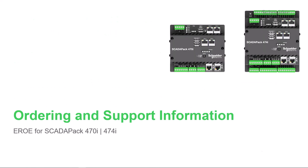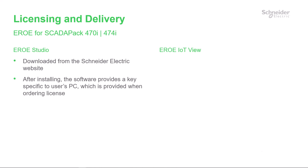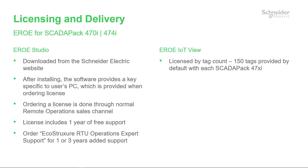Now let's have a quick look at ordering and support information for Aero. You can download Aero Studio from the Schneider Electric website. After you've installed it, the software will provide you with a key specific to your PC, which you will provide when placing your order. Orders for Aero will be placed through your normal remote operations sales channel. The license provides one year of support, and you can order one or three additional years. The Aero IoT View application is licensed by tag count: 150 tags are provided by default, and you can purchase a 1500 tag license if required.